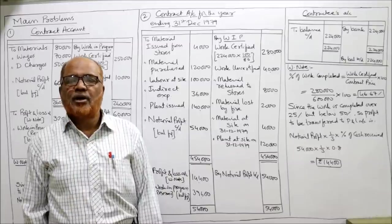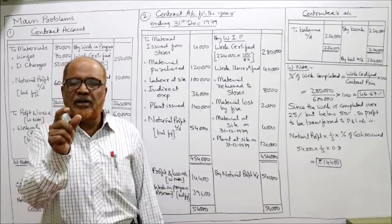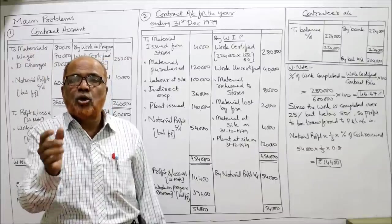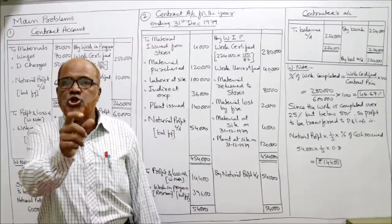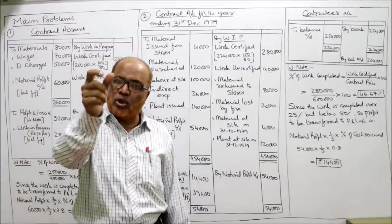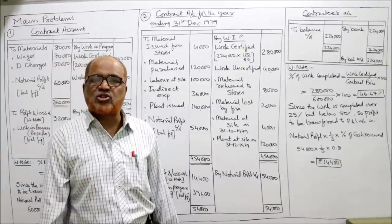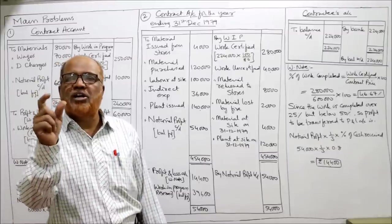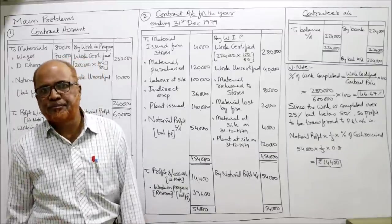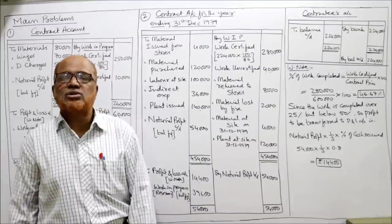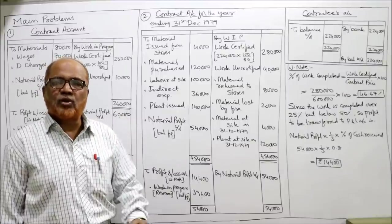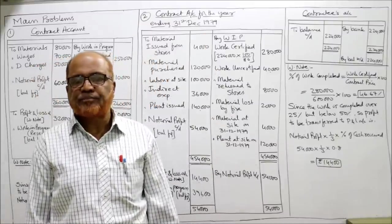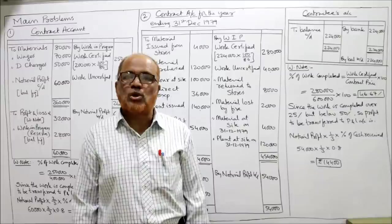Since completion is below 50% but above 25%, the rule is: profit to P&L = notional profit × 1/3 × percentage of cash received. Notional profit = 54,000 × 1/3 × 0.8 = 14,400. So 14,400 is the profit transferred to P&L. The remaining 54,000 − 14,400 = 39,600 is transferred to work-in-progress reserve. That completes the contract account.